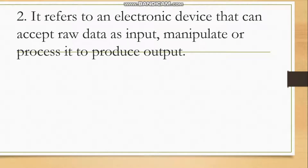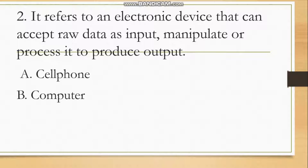Number two: it refers to an electronic device that can accept raw data as input, manipulate, or process it to produce output. Options: letter A, cell phone; B, computer; C, radio; or D, telephone. What's the answer?